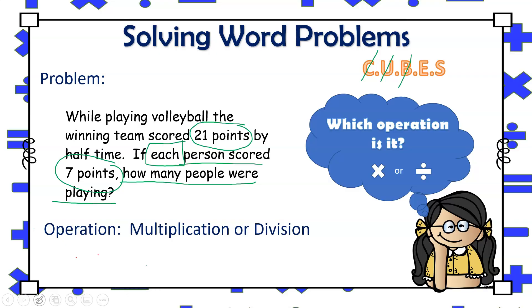With this in mind, we're now ready to start evaluating the word problem more closely. We already know that the team has a total of 21 points, and that each person scored seven points. So we can see that in this problem, the total number of points is already given.